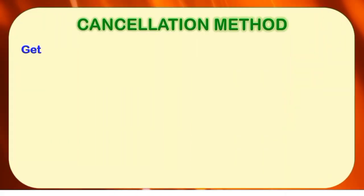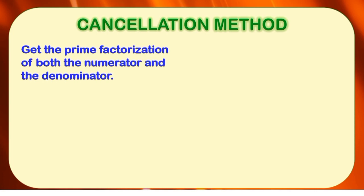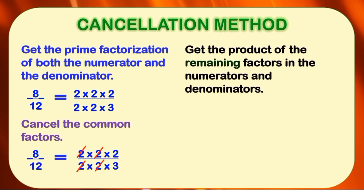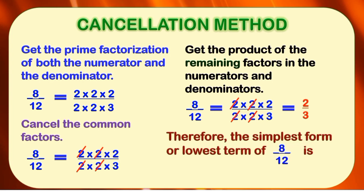Cancellation Method — example one, using eight-twelfths. The first step is to get the prime factorization of both the numerator and denominator. The prime factorization of eight is two times two times two, while for twelve, that is two times two times three. The second step is to cancel the common factors. In eight-twelfths, there are two pairs of common factors: two and two. The third step is to get the product of the remaining factors: two in the numerator and three in the denominator. So we form the fraction two-thirds. Therefore, the simplest form or lowest term of eight-twelfths is two-thirds.